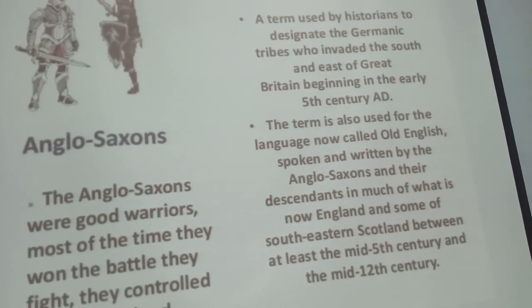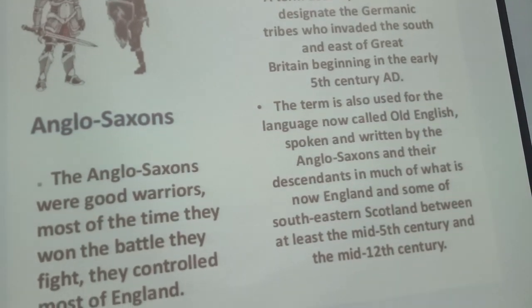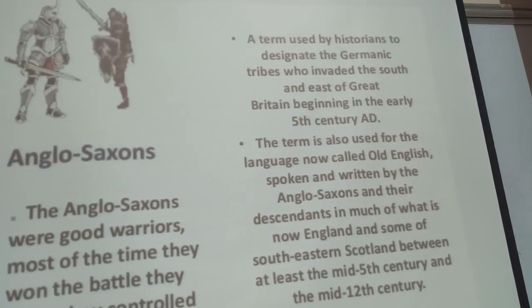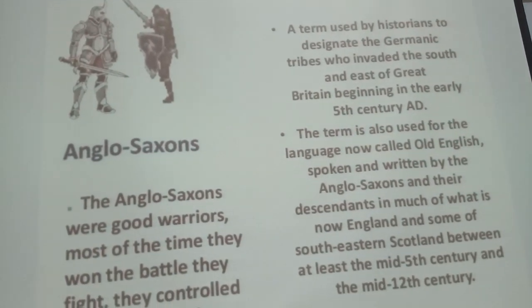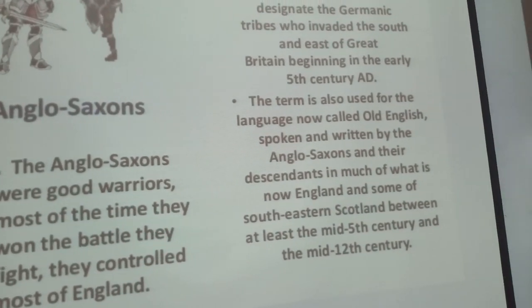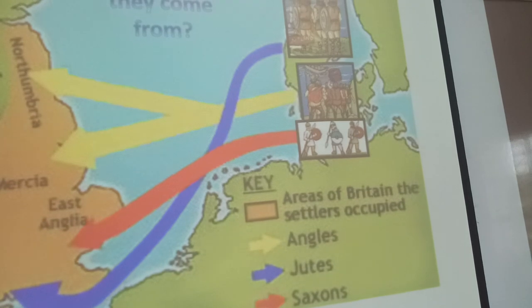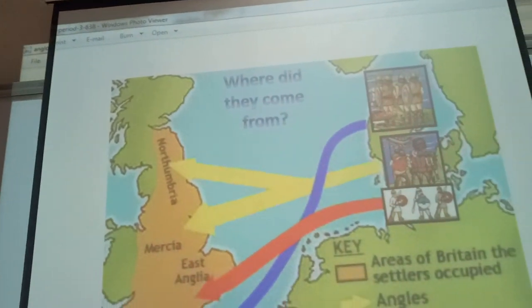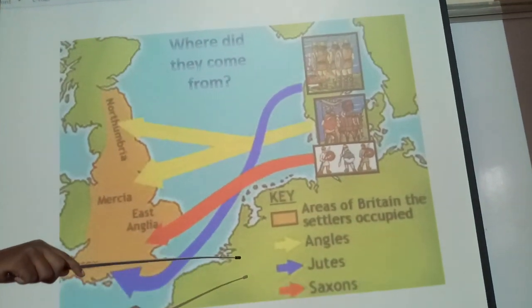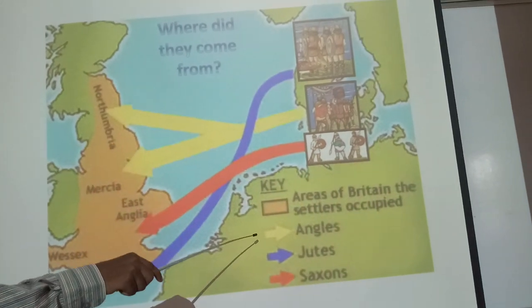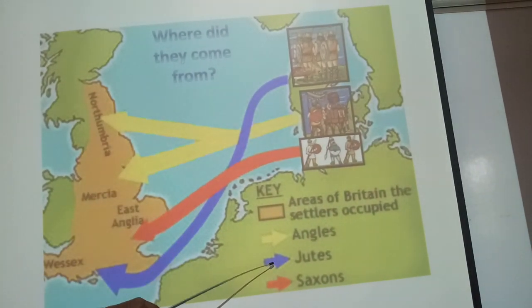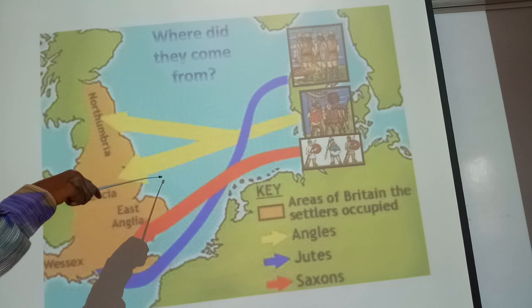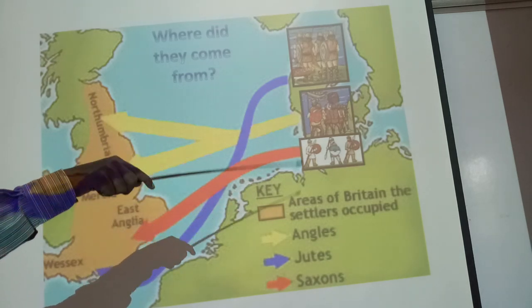The term is also used for the language now called Old English, spoken and written by the Anglo-Saxons and their descendants in much of what is now England and some of south-eastern Scotland, between at least the mid-5th century A.D. and the mid-12th century A.D. This is the map of Britain showing different tribes: the yellow one is Angles, the blue one is Jutes, and the red one is Saxons. These three tribes all came from Germany.